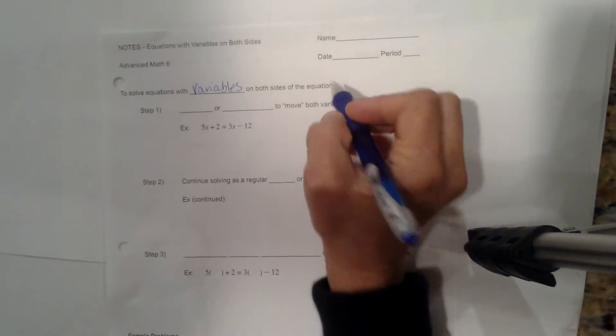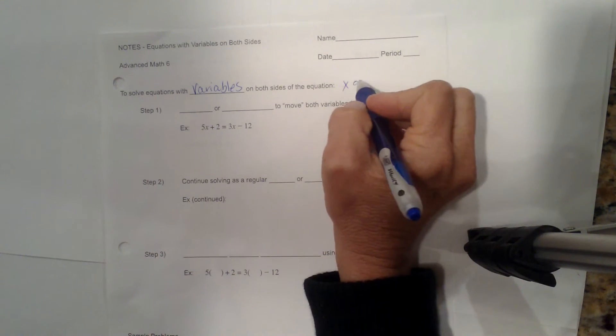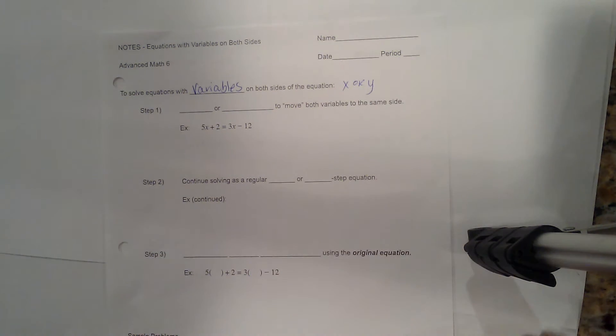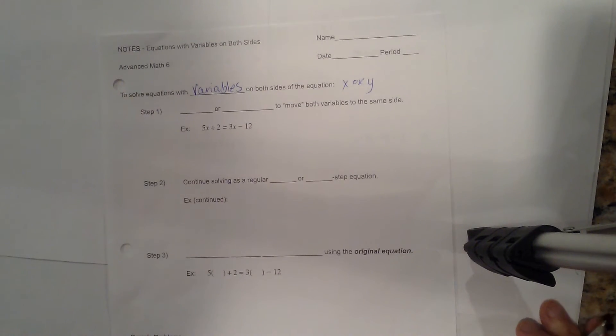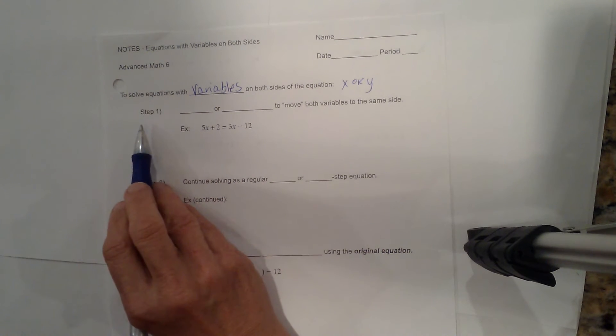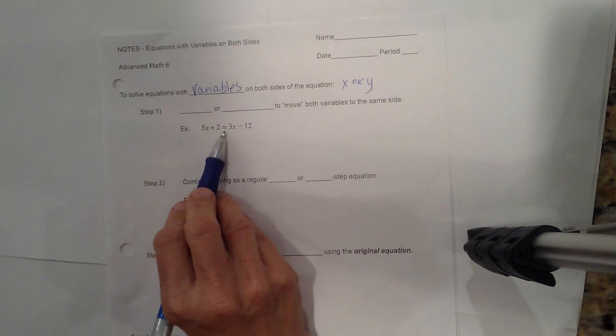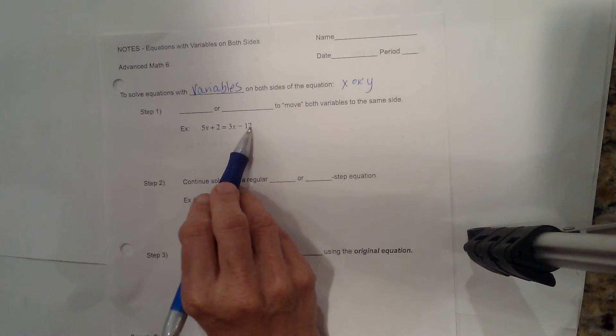Now what's a variable? That can be the value x or y or any letter that represents a number. So here's our first example. We have 5x plus 2 is equal to 3x minus 12.